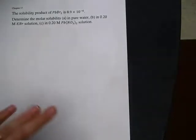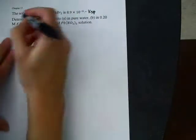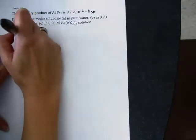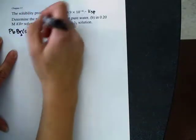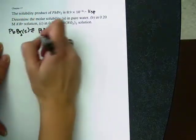All right, so I have the Ksp given to me for this one. They called it the solubility product, but that's what it is. So I'm going to label it as Ksp. I'm going to write my dissociation reaction. So this would separate into one lead and two bromines.